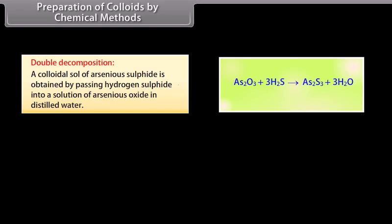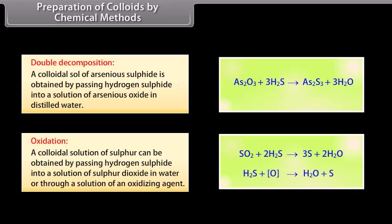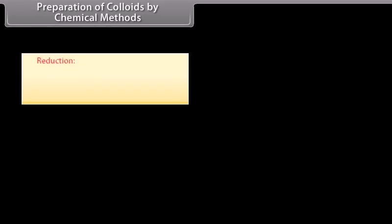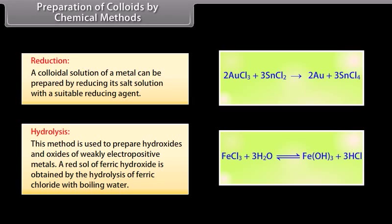Preparation of colloids by chemical methods: Colloidal solutions can be prepared by double decomposition, oxidation, reduction, and hydrolysis. Double decomposition: colloidal arsenious sulphide sol is obtained by passing H₂S into a solution of arsenious oxide in distilled water. Oxidation: colloidal sulphur is obtained by passing H₂S into a solution of SO₂ in water or through an oxidizing agent. Reduction: colloidal metal solutions are prepared by reducing their salt solution with a suitable reducing agent. Hydrolysis: used to prepare hydroxides and oxides of weakly electropositive metals — a red sol of ferric hydroxide is obtained by hydrolysis of ferric chloride with boiling water.